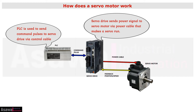The servo drive also receives encoder signals from the servo motor, which makes the servo system a closed loop. The encoder gives information about the rotor position and speed of the rotor back to the servo drive. This is how a servo motor works.